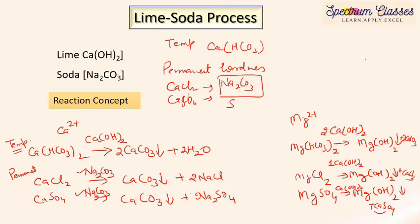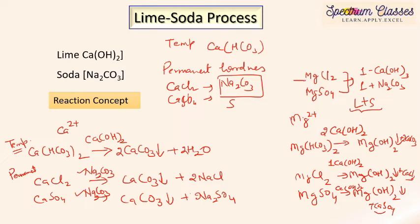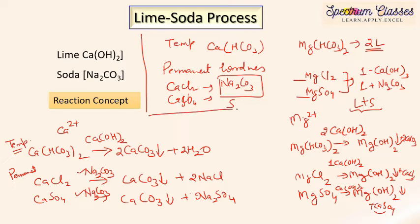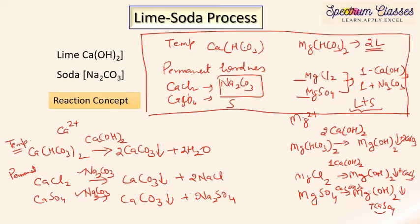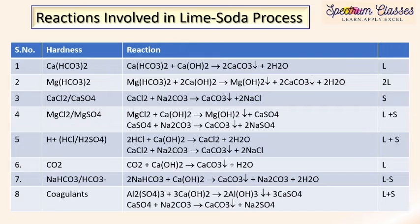For temporary hardness (calcium bicarbonate), one mole of lime is required. For temporary magnesium bicarbonate, two moles of lime are required. For permanent hardness — calcium chloride or calcium sulfate — one mole of soda is required. For permanent magnesium hardness — magnesium chloride or magnesium sulfate — one mole of lime and one mole of soda are both required. This is the key rule to remember for solving numericals.